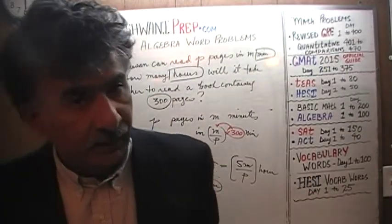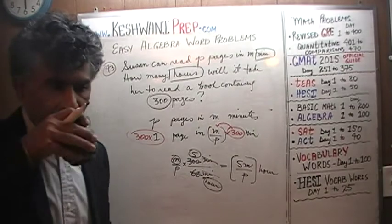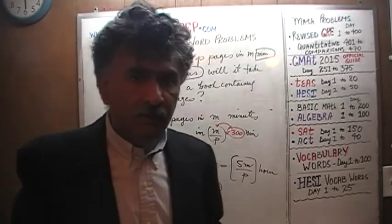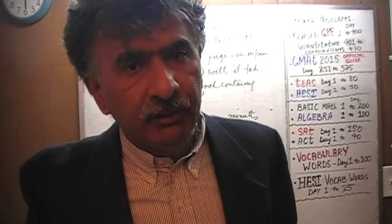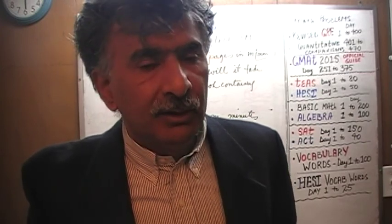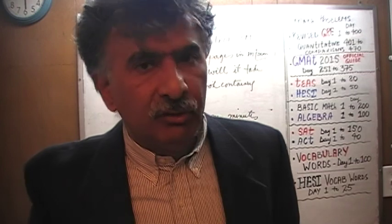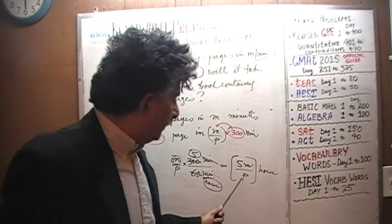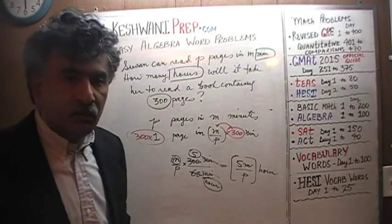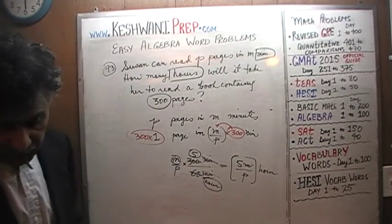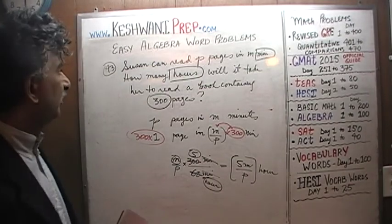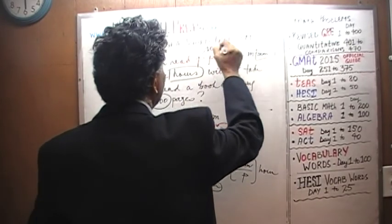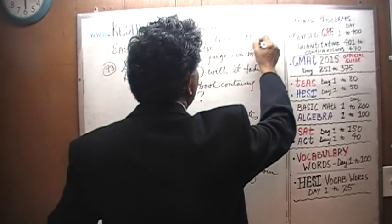We are not quite done yet — we need to verify our answer, again by plugging in numbers for the variables and converting this algebraic question into an arithmetic question. We'll solve it arithmetically and see if we get the same result. I'm going to pretend that we can read 10 pages in 3 minutes.